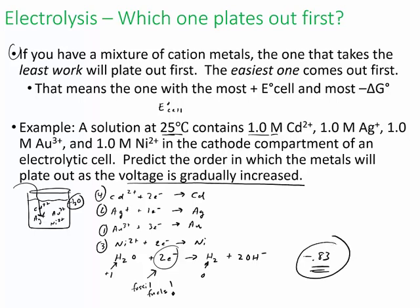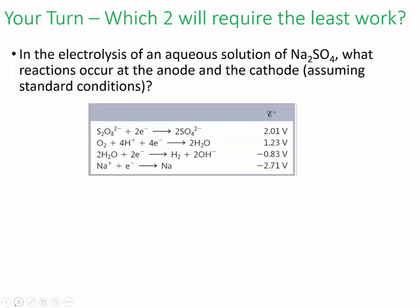All right, so try this question. In the electrolysis of an aqueous solution of sodium sulfate, what reactions occur at the anode and what occurs at the cathode? So it's saying which one gets oxidized and which one gets reduced out of these four.